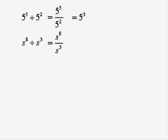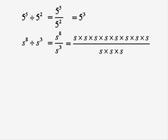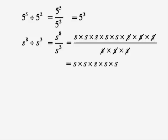Once again, write it as a fraction and split it up. 8 S's all multiplied divided by 3 S's all multiplied. And we can cancel out 3 S's from the top with 3 from the bottom and that leaves us with just the 5 leftover S's on the top. So that becomes S to the power of 5.